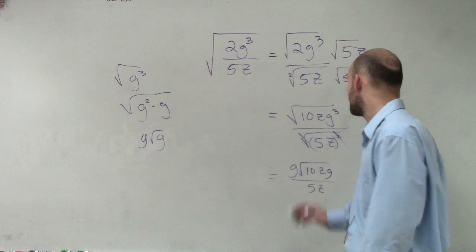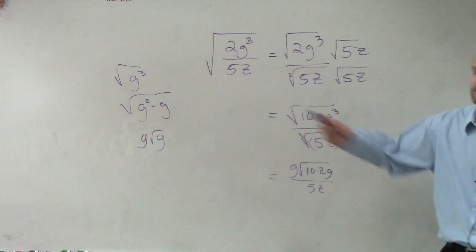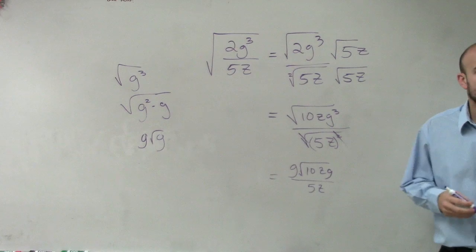It's 10zg, thank you. Because that g was still under the radical. Anybody have any questions on that?